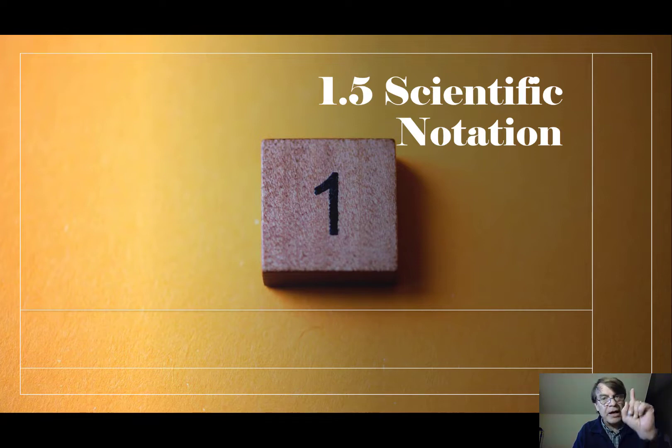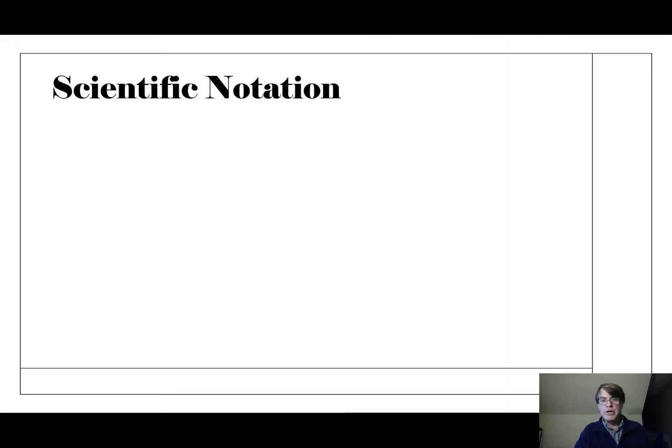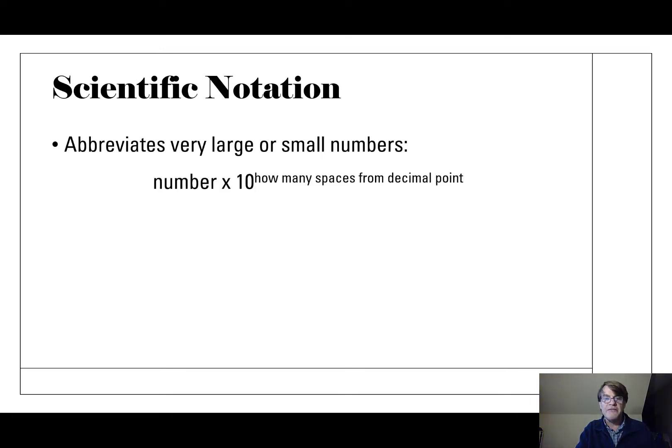But this will be quick, I promise, and not very painful. So, scientific notation. You may have already studied it in high school, but basically it's a way to abbreviate really large numbers like 6.25 quintillion or really small numbers when you're dealing with something that's the size of an atom. Scientific notation abbreviates very large or very small numbers.